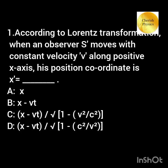According to Lorentz transformation, when an observer s-dash moves with a constant velocity v along the positive x-axis, his position coordinate is x-dash, which is equal to...